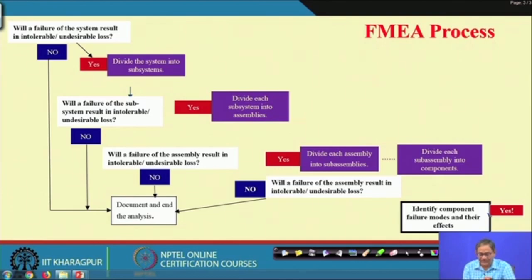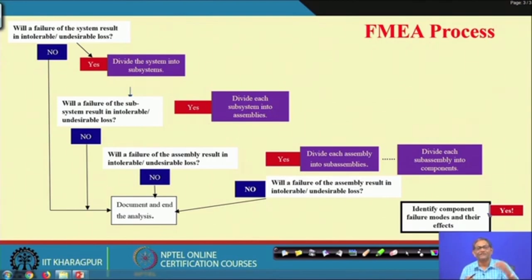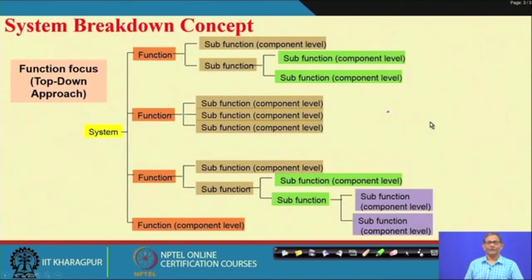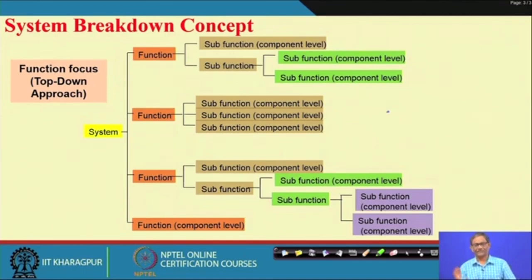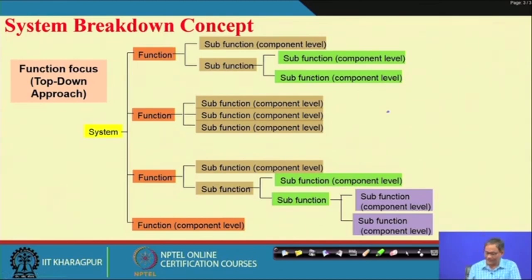Essentially, those components which result in loss — that loss may be at the subsystem level, at the component level, or at the system level — are the ones you focus on. If any component failure has system-level loss, then it is a very important component. Last class the system breakdown concept was discussed with reference to the bottom-up approach, where system, subsystem, then component to part was shown. You can also go for a functional approach: the system has different functions, then sub-functions, then sub-sub-functions down to component level.